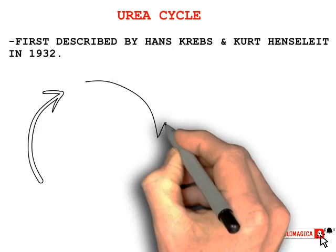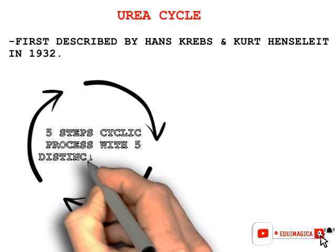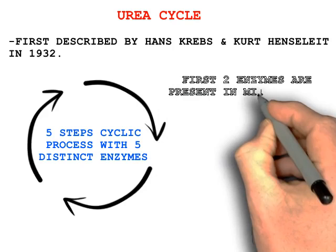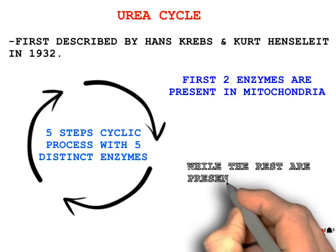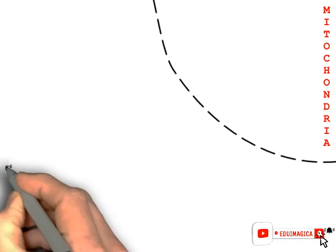Now let's talk about the urea cycle. The urea cycle was first described by Hans Krebs and Kurt Henseleit in 1932. It is a five-step cyclic process with five distinct enzymes, where the first two enzymes are located in the mitochondria, whereas the other enzymes are located in the cytosol. So we can say that it takes place both in the mitochondria and the cytosol. We have divided this diagram into two parts: the first part is the mitochondria and the second is the cytosol.